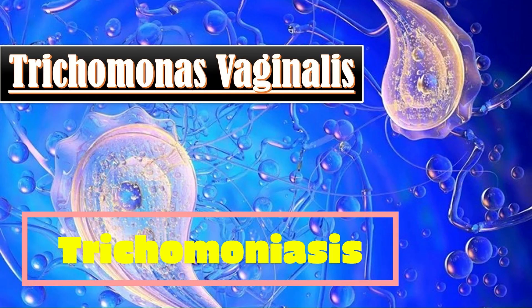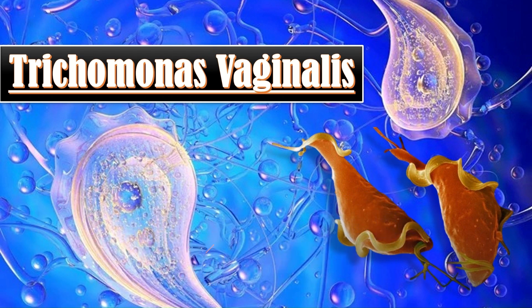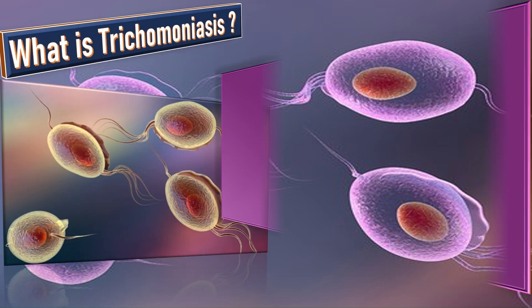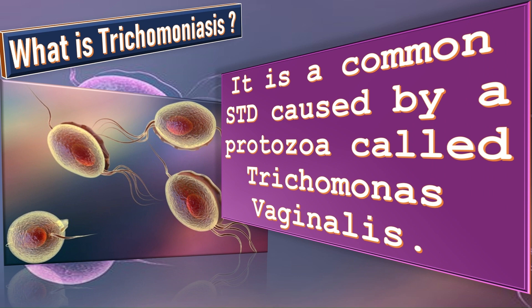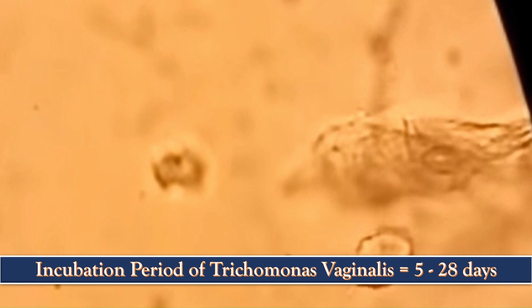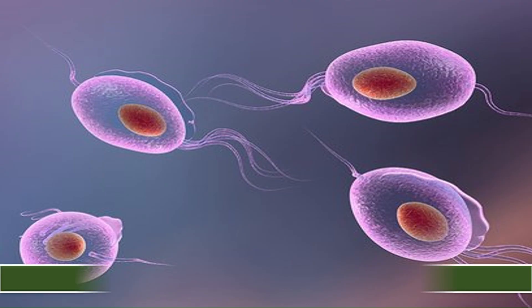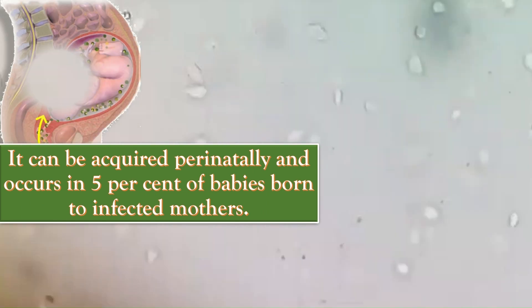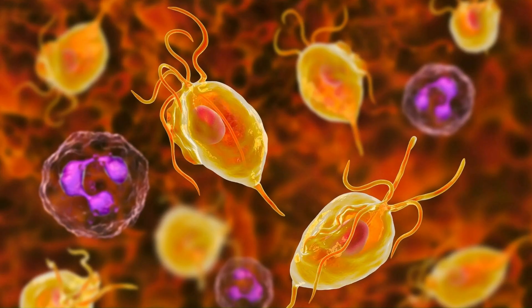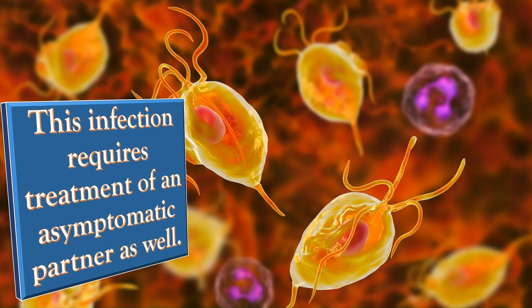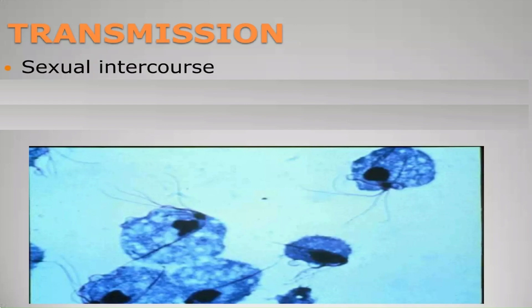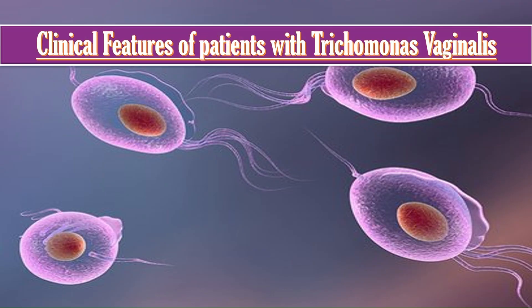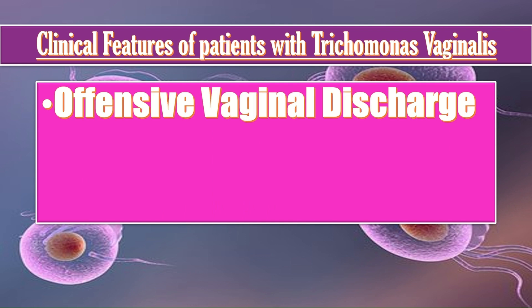Trichomonas vaginalis is an anaerobic flagellated protozoan parasite which causes trichomoniasis — a common sexually transmitted disease. The incubation period is five to twenty-eight days. Up to fifty percent of infected women may be asymptomatic. It can be acquired perinatally and occurs in five percent of babies born to infected mothers. This infection requires treatment of the asymptomatic partner as well. Transmission is via sexual intercourse, mutual masturbation, or mother to child during vaginal delivery.